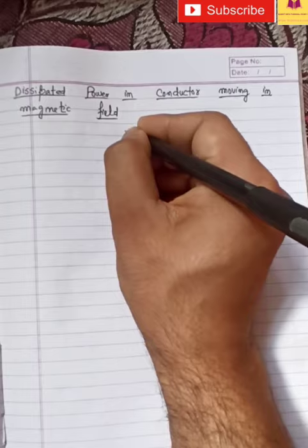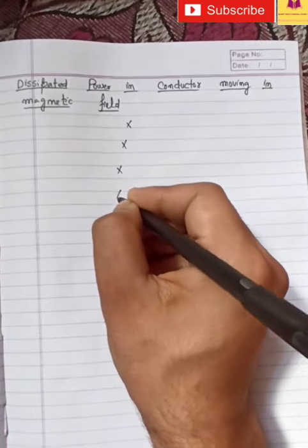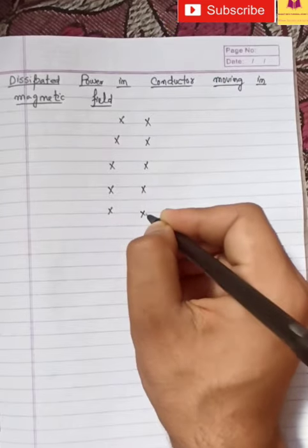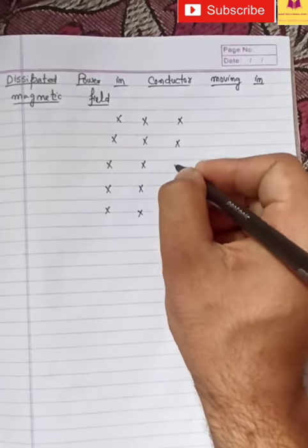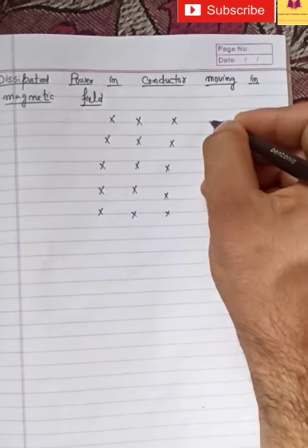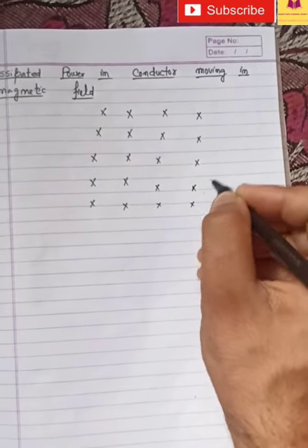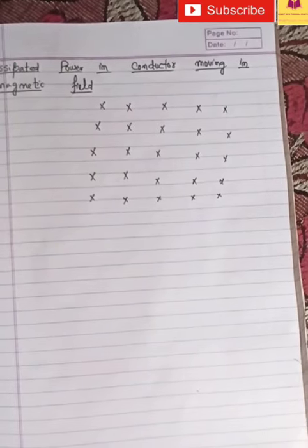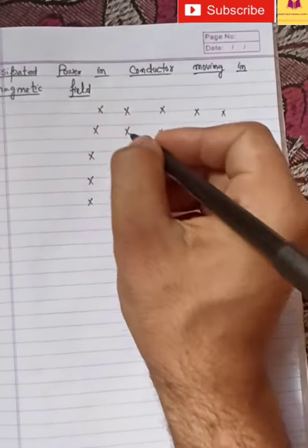Let us say we have a magnetic field like this. This is a magnetic field which is into the plane of paper. And we have a conductor, say for example we have a conductor which is just like this.